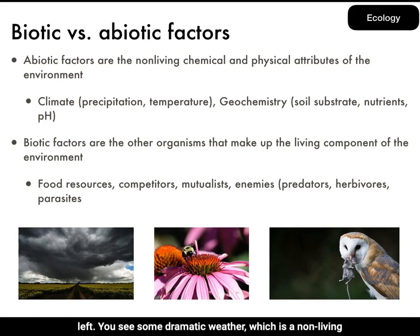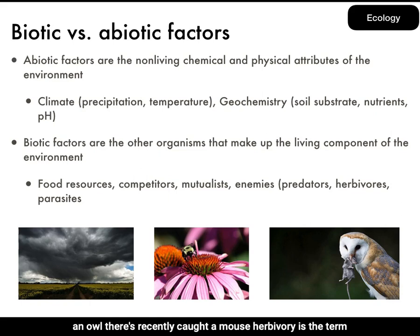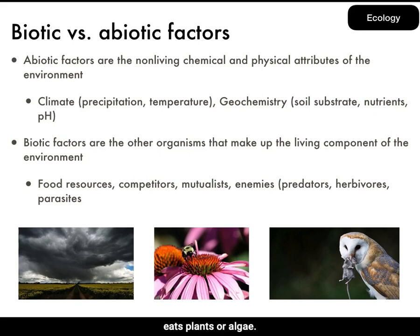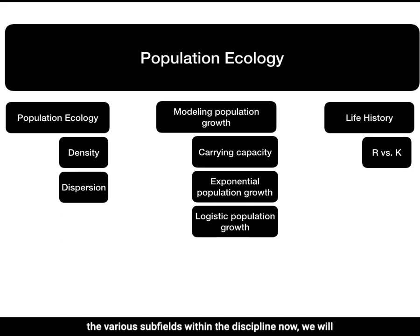On the left, you see some dramatic weather, which is a non-living component of the environment. In the center is a bee visiting a flowering plant, gaining nutrients from the plant and providing pollination. The right photo illustrates predation — you see an owl that has recently caught a mouse. Herbivory is the term for predation when the predator is a herbivore, an organism that eats plants or algae.